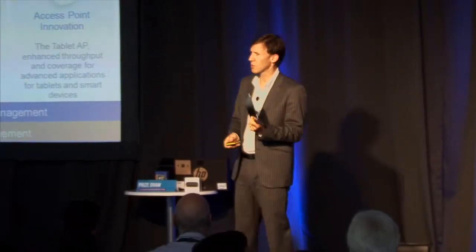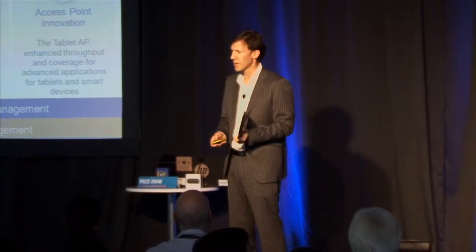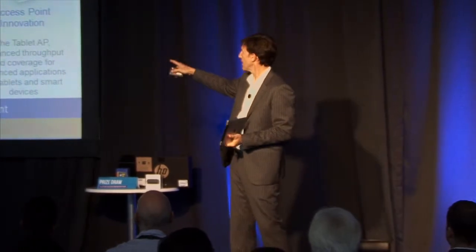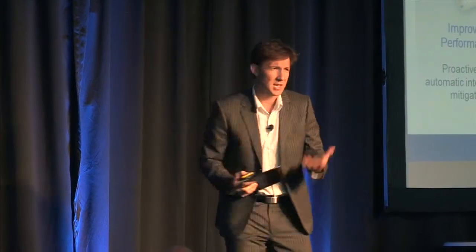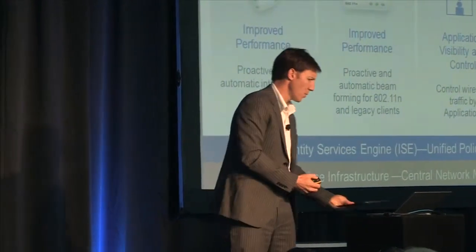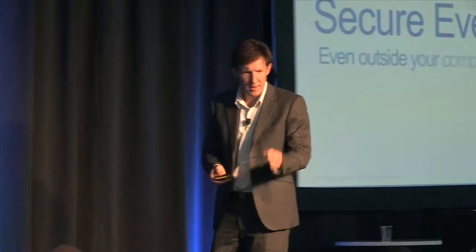I also want to understand what applications devices are pushing across the network and control them before they hit my corporate wired network or data center, so I need application visibility and control, or AVC. And if we get the wireless right, we want to leverage our investment - have you heard of 802.11ac? That's where we move from 450 megabits per second to gigabit Wi-Fi. Behind that is 802.11ad, which will take us over 4 gigabits on Wi-Fi. The 3600 series actually has a modular radio so you can replace the radio and pump out those data rates.